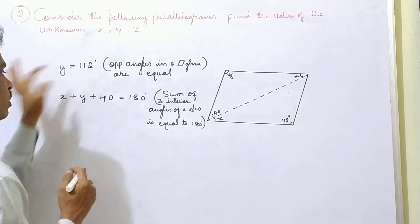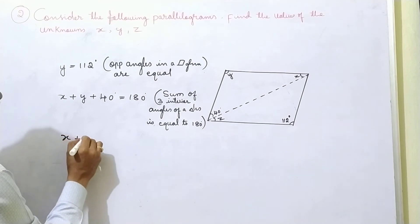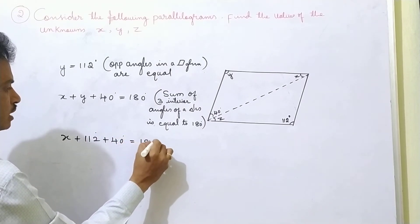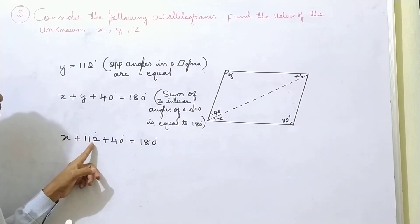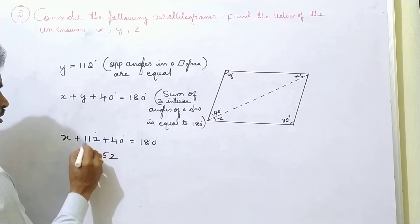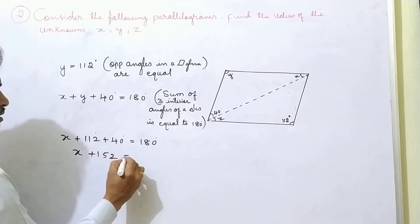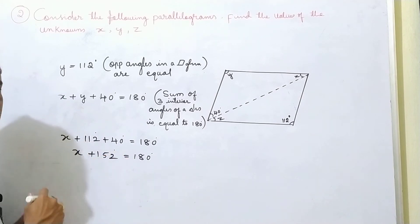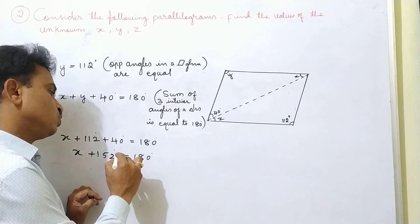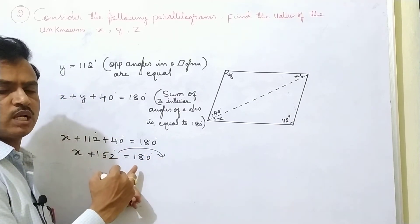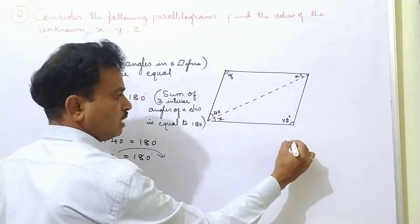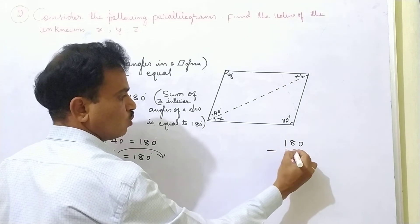Now, Y value we got is 112. So X plus 112 plus 40 degrees is equal to 180 degrees. Adding 112 and 40 gives 152, so 152 plus X is equal to 180 degrees. Then we subtract: 180 degrees minus 152 degrees.